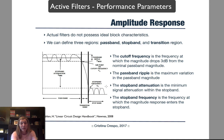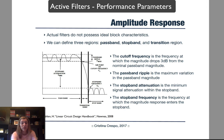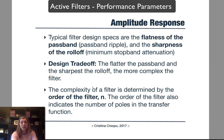The cutoff frequency, by definition, is the frequency at which the magnitude response drops 3 dB from the nominal passband magnitude. Normally, we do have some ripple. The passband ripple is the maximum variation in the passband. There is typically also some ripple in the stopband. The stopband attenuation is the minimum signal attenuation within the stopband, and the stopband frequency is the frequency at which the magnitude response enters that stopband region.